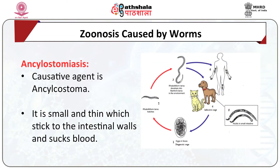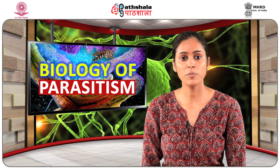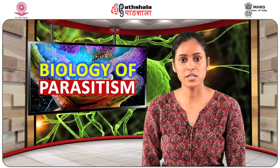Ancylostomiasis: the causative agent is Ancylostoma duodenale, a parasitic nematode commonly known as the Old World hookworm. It lives in the small intestine of hosts such as humans, cats and dogs, where it is able to mate and mature. It is small and thin, sticking to intestinal walls and sucking blood. This parasite normally infects kittens and puppies.